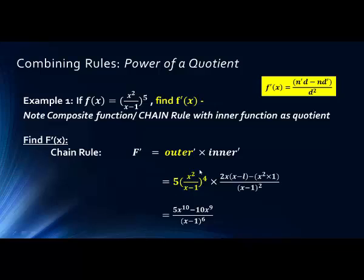After simplifying, we have x squared raised to the fourth power, giving x to the eighth, over (x minus 1) to the fourth, times another (x minus 1) squared, giving (x minus 1) to the sixth. Combined we get 5x to the eighth times the rest, and this is the simplified result.